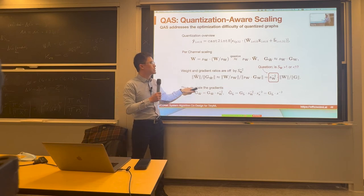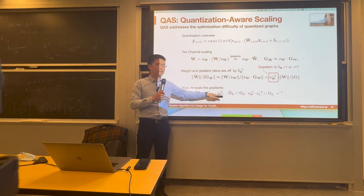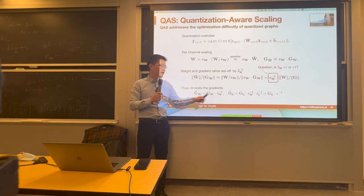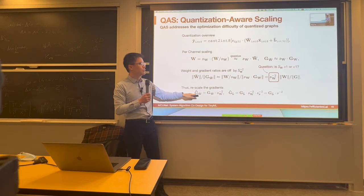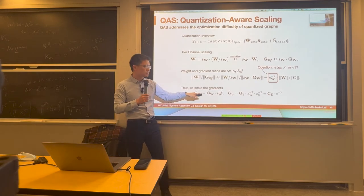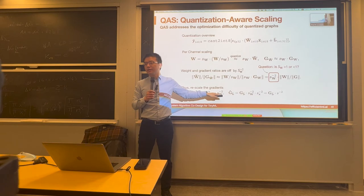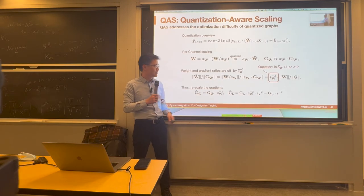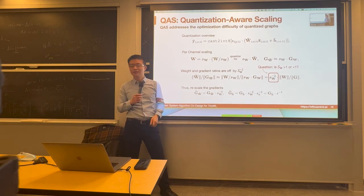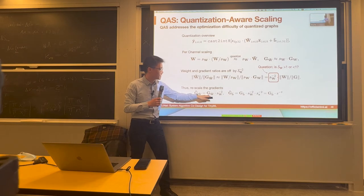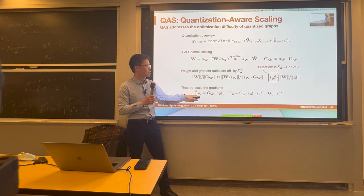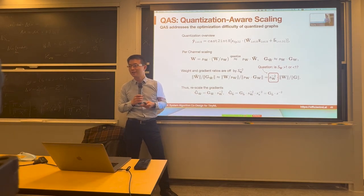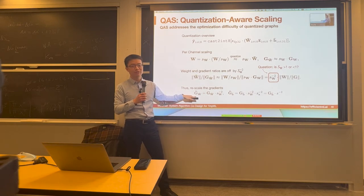Very simple technique — the mathematical derivation is long, but the conclusion is super simple: just multiply S_W^2, a value larger than one, into the gradient. Maybe just one line of code, and it significantly reduces training loss and improves accuracy.